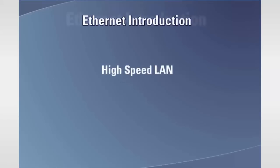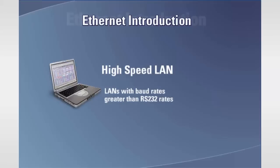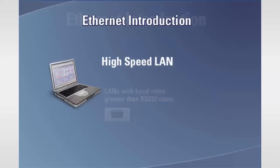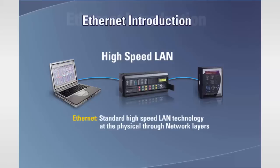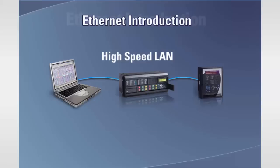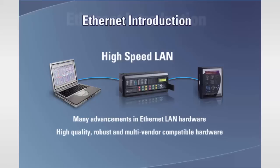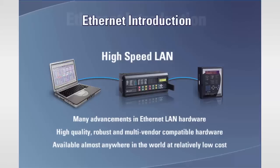The term high-speed LAN is open for interpretation as to what is considered high speed. The general consensus is that this term refers to LANs with baud rates that are at least greater than what can be achieved through a serial RS-232 port found on a common desktop computer. There are many high-speed LAN technologies on the market today, with some being closed and others open. It's also generally accepted that Ethernet is the standard high-speed LAN technology at the physical through network layers. Over the past decade, there have been many advancements in Ethernet LAN hardware, resulting in high-quality, robust, and multi-vendor compatible hardware readily available almost anywhere in the world at relatively low cost.